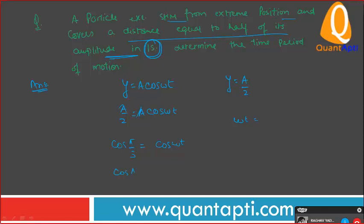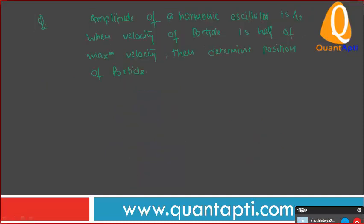Omega T equals pi by 3. Have they given a value of T here? One second. So cos pi by 3 equals cos omega. Value of omega is pi by 3. What do we need to find? Time period T equals how much? Six seconds.